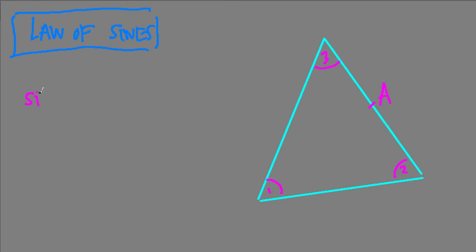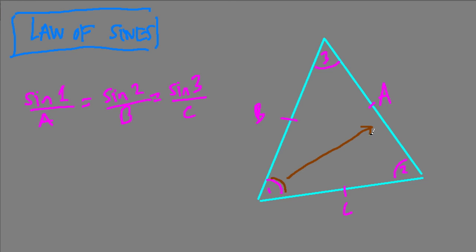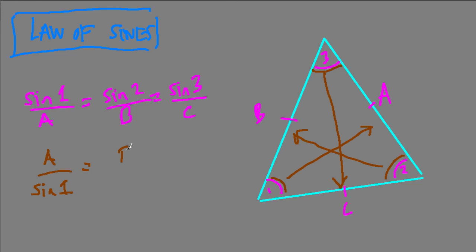The sine of angle 1 over A is equal to the sine of angle 2 over side length B, which is the same thing as the sine of angle 3 over C. So the sine of this angle over its opposite side equals the sine of this angle over its opposite side in any triangle. Or the reverse: we can say A over the sine of angle 1 equals B over the sine of angle 2, equals C over the sine of angle 3.